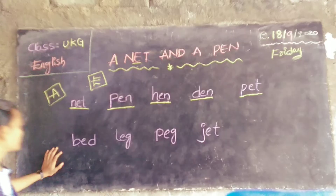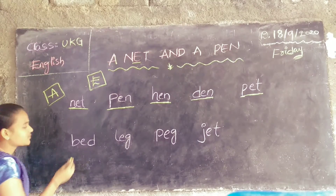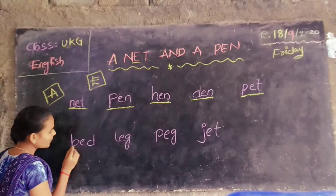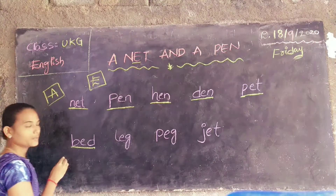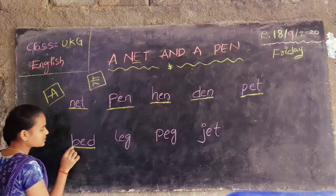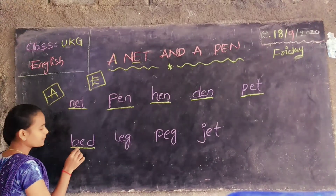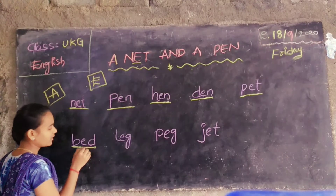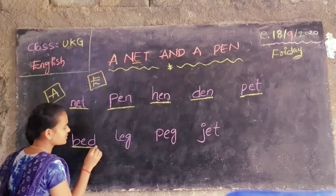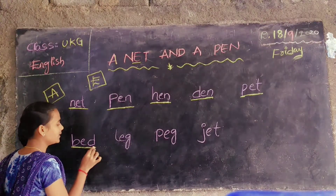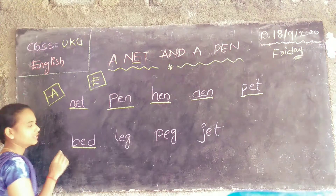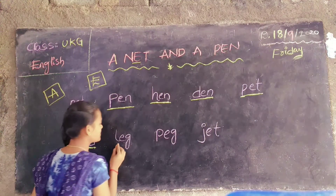Here, next word: B-E-D. Bed. The sound of B is Ba. Next E sound? A. Next D sound? Da. B-E-D. Bed.